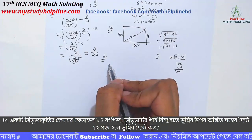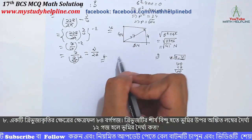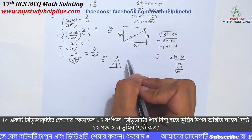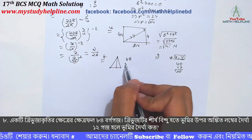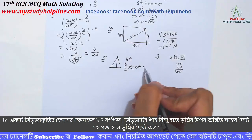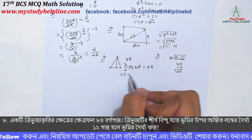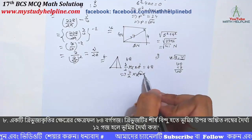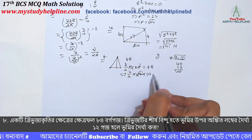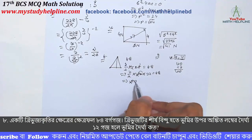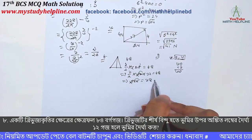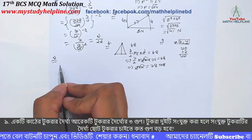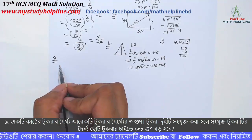ઉત્તર. Problem number 8, half into base into ઊંચાઈ equal to area, equal to ક્ષેત્રફળ, same area. Half into base, ઊંચાઈ 12, base calculation.